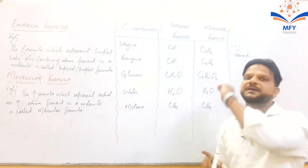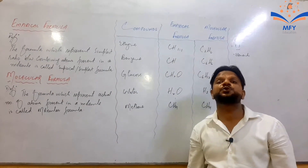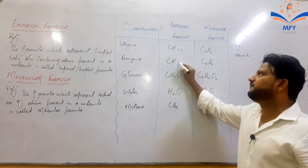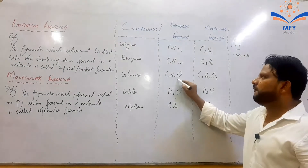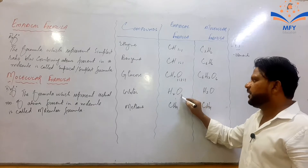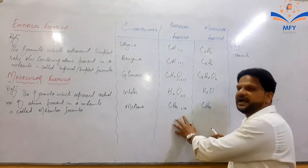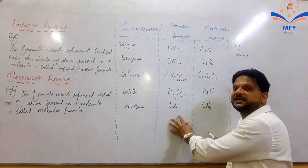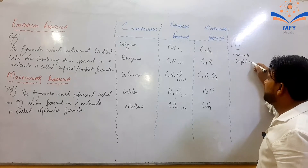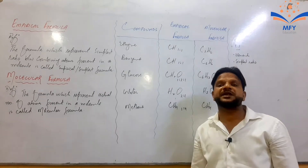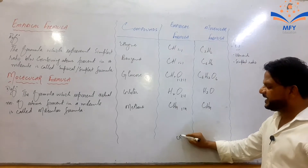دوسری بات — empirical formula ایک ratio بتاتا ہے۔ ایتھائین میں carbon اور hydrogen کا one is to one ratio ہے۔ بینزین میں بھی one is to one، گلوکوز میں one is to two is to one، water میں two is to one، اور methane میں one is to four۔ تو اس کا مطلب یہ ہے کہ empirical formula combining atoms کے درمیان simplest ratio کو ظاہر کرتا ہے۔